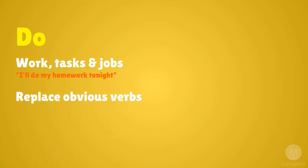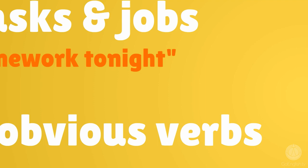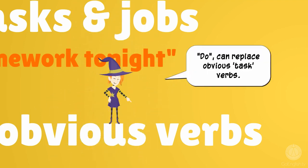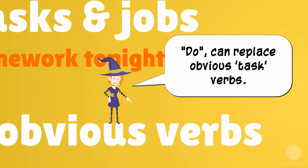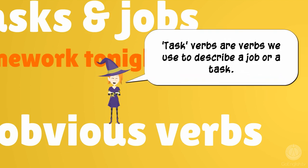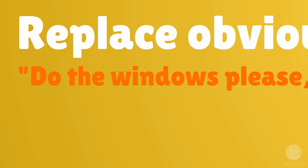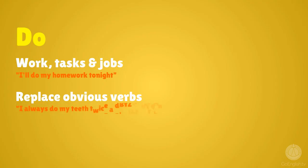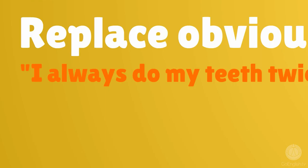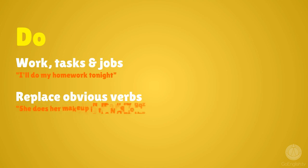Do can also replace obvious task verbs. Task verbs are verbs we use to describe a job or a task. For example: Do the windows please, they're very dirty. I always do my teeth twice a day. She does her makeup in the mornings.